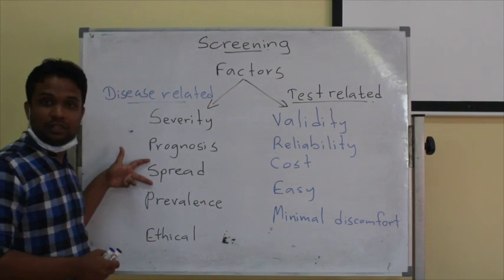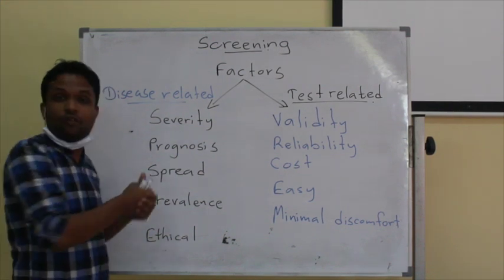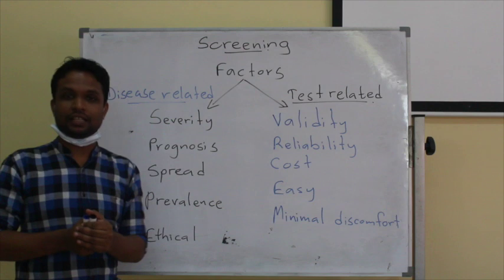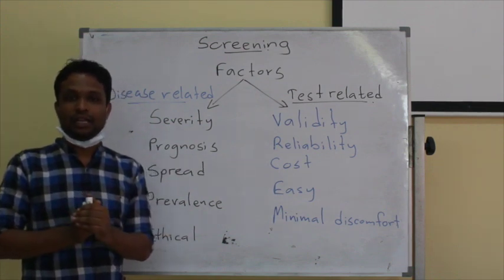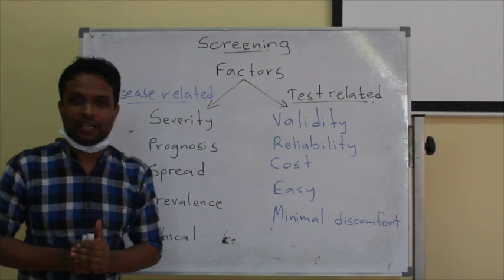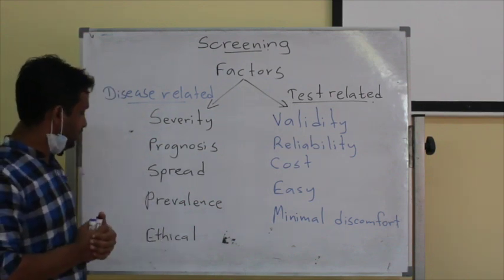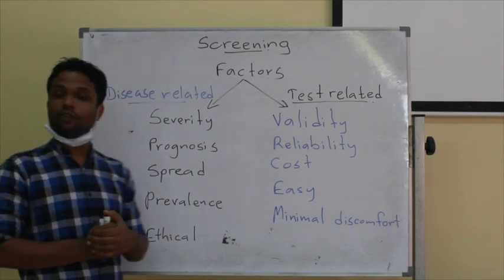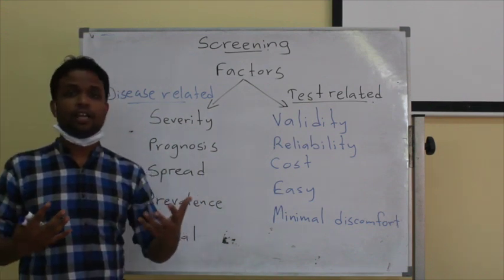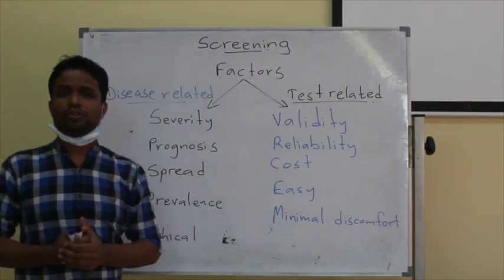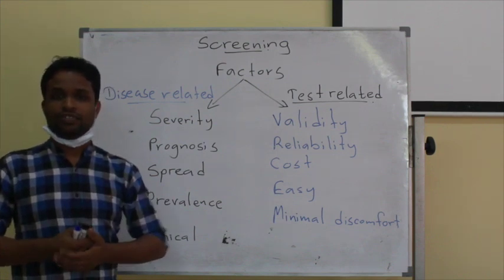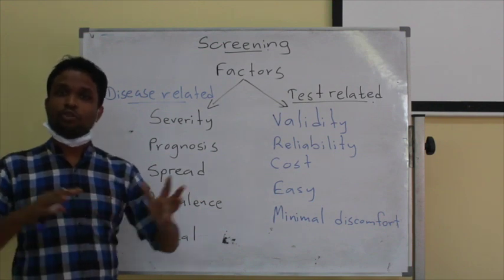We also need to think about the ability of a disease to spread. If a disease spreads very fast, it is important to apply screening, identify susceptible individuals, and quarantine or isolate them — the best example being the ongoing COVID-19 outbreak. The next important factor is prevalence: if a disease is very rare, thousands of screening tests will identify only a few patients, making it not a cost-effective procedure. Generally, we apply screening tests to identify the most prevalent diseases.